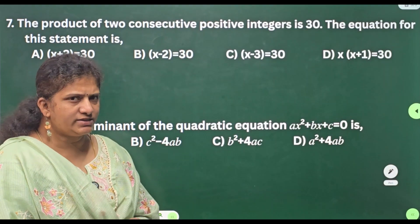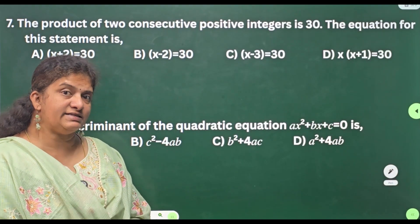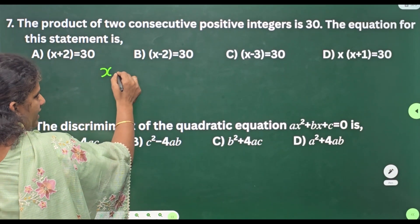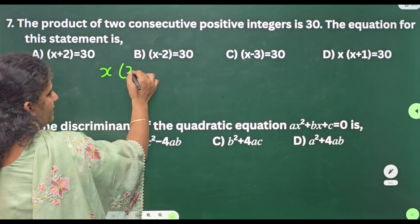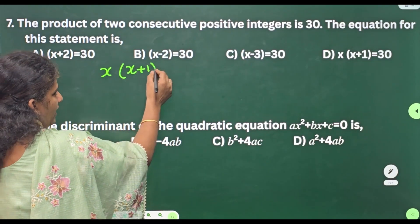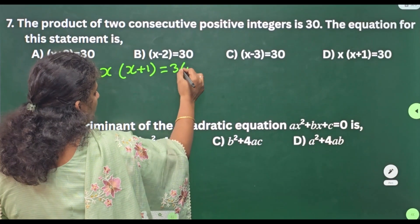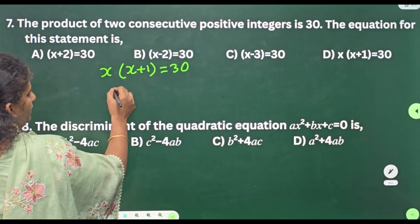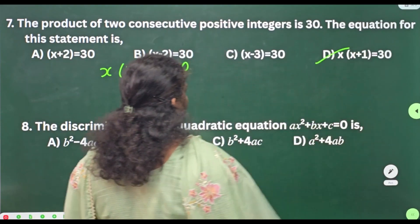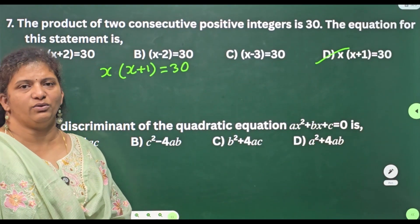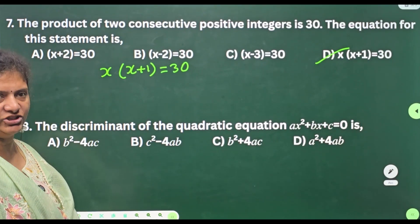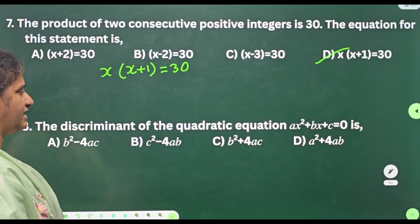Seventh one: the product of two consecutive positive integers is 30. Let the two consecutive positive integers be x and x + 1. Their product means multiply both of them, which is equal to 30. Check for this option — do you have this? Yes: x(x + 1) = 30.